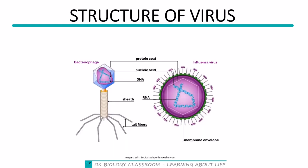Let's look at these structures. Here we have bacteriophage on the left-hand side, which is a virus, and influenza virus on the right-hand side, comparing their structures. This is showing the nucleic acid — in the case of bacteriophage, the nucleic acid is in the form of DNA, but for influenza virus, it is in the form of RNA. And then there is the protein coat, also referred to as a capsid.